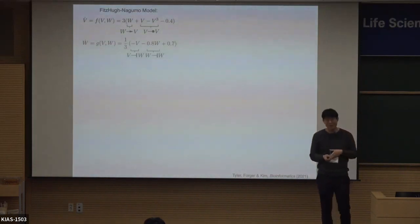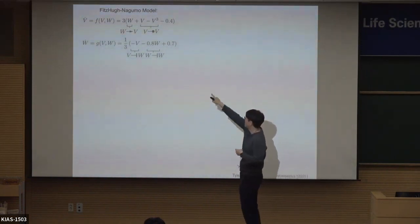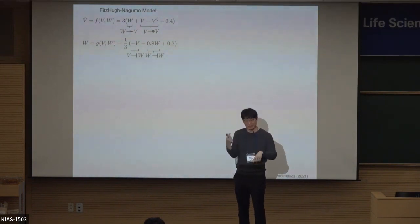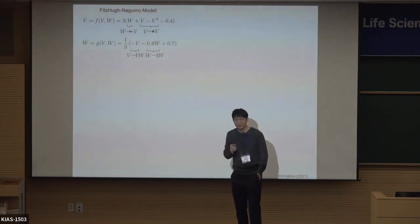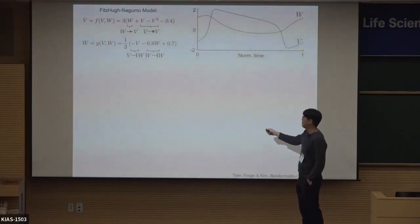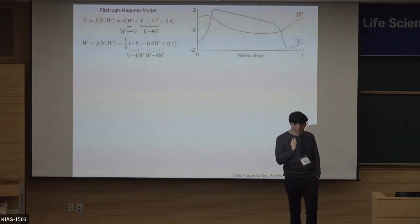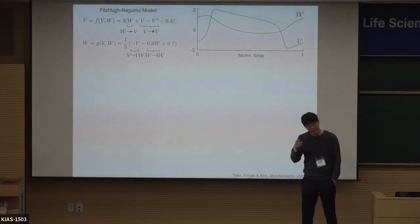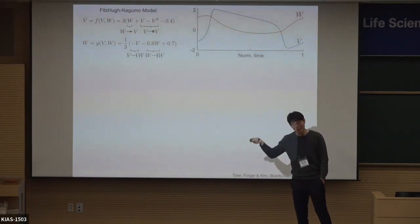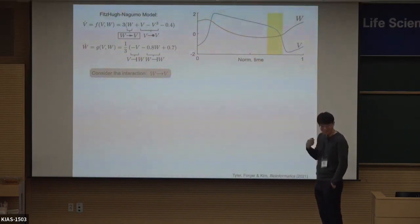Let me begin with the FitzHugh-Nagumo model — a two-dimensional ODE model. There are four types of interaction between variable v and variable w. For instance, w positively regulates v because v-dot has a positive w term. Assuming we don't know the equation, can we recover these four causation types just by looking at the solution? One simple approach: since w positively regulates v, maybe as w increases, v also increases. Unfortunately that doesn't work — w can be increasing while v is decreasing.